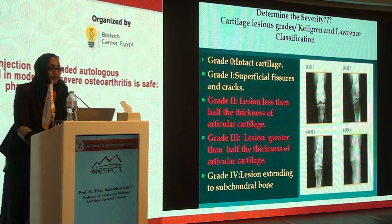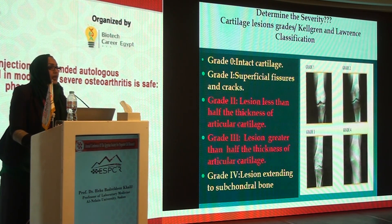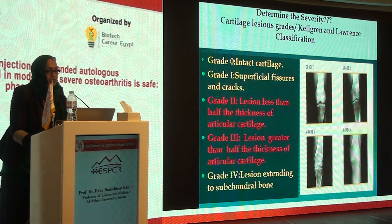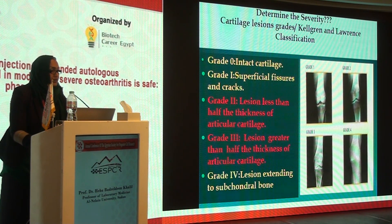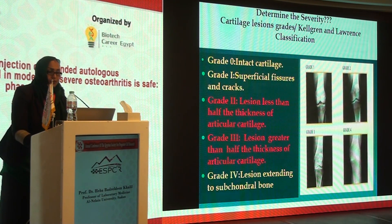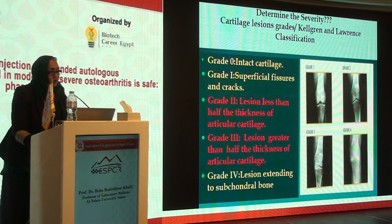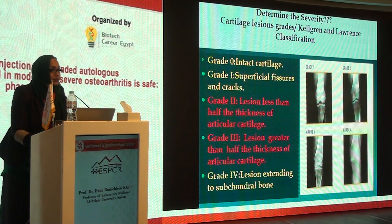According to the Kellgren and Lawrence classification, we have four grades of osteoarthritis severity. Grade 1 is intact cartilage. Grade 2 is a lesion less than half the thickness of the articular cartilage. Grade 3 is a lesion greater than half the thickness of the articular cartilage. Grade 4 is a lesion extending to the subchondral bone. We are focusing on grade 2 and grade 3 — the pre-terminal phase.